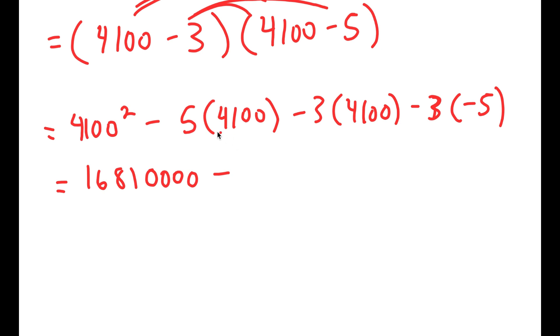Then, minus 5 times 4,100, I can just say this is 5 times 41, which is 205, and then add two zeros. Minus 3 times 4,100, which is 123, and I can add two zeros. Minus 3 times negative 5, which is positive 15.